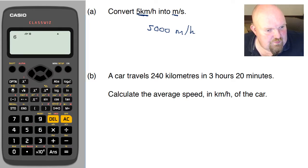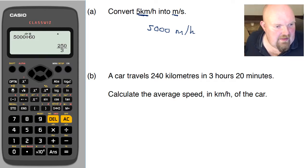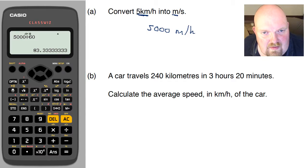then I will get 5,000 divided by 60, which gives me 83.3 recurring meters per minute. And then if I divide that by 60 again,